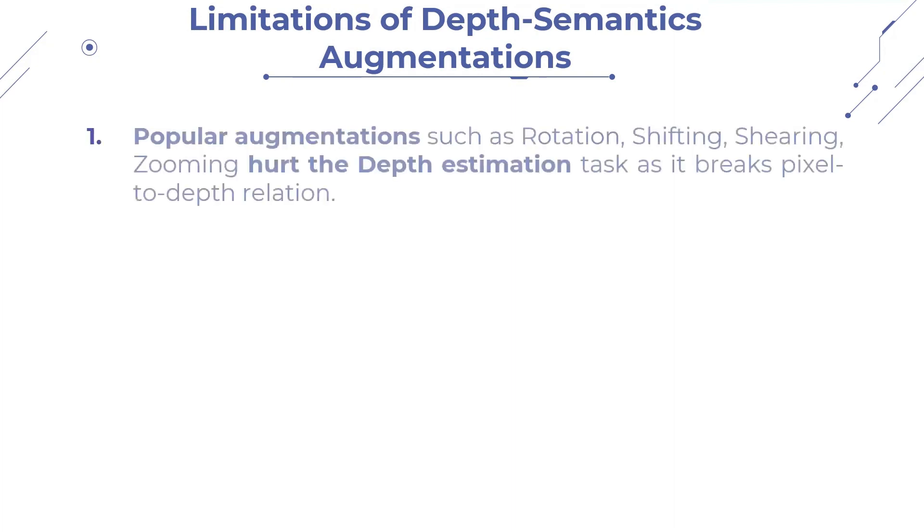On the other hand, augmentations introduce additional challenges in joint depth and semantic tasks. For instance, popular augmentations, such as rotation, shifting, shearing, zooming, hurt the depth estimation task, as it breaks the pixel to depth relation.